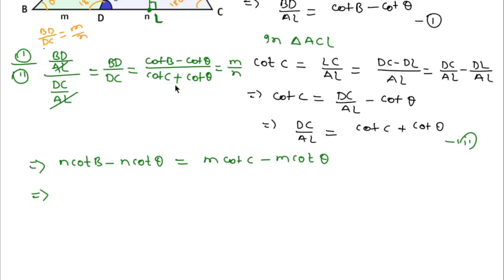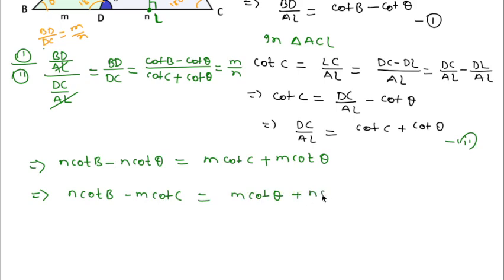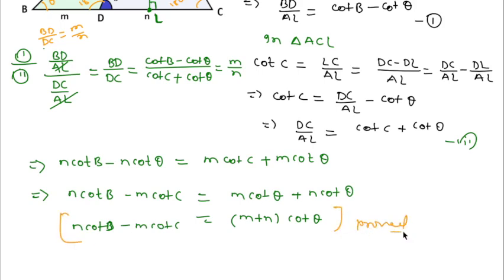Rearranging: N cot B minus M cot C equals M cot theta plus N cot theta. Taking cot theta common: M plus N times cot theta equals M cot B minus N cot C. This is exactly the second relation we had to prove, so the second relation is also proved. Thanks for watching this video; please like, share, and subscribe to this channel.